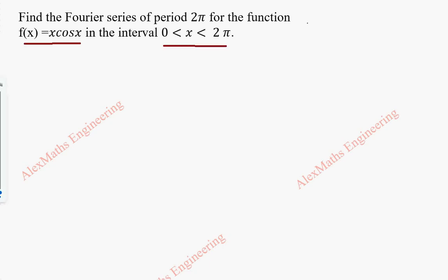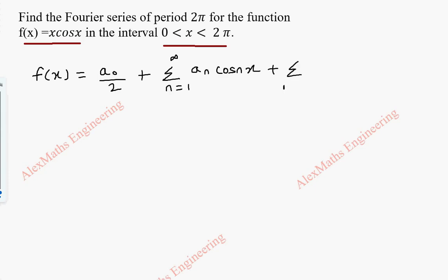The first part, we are going to write the formula for the Fourier series, which is f(x) = a0/2 plus summation n=1 to infinity of an·cos(nx) plus summation n=1 to infinity of bn·sin(nx).